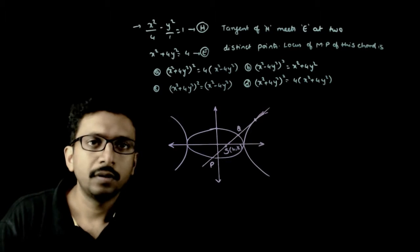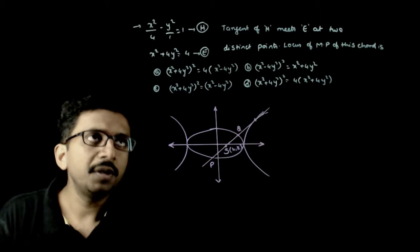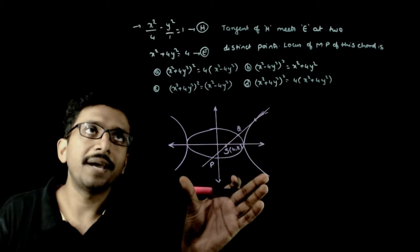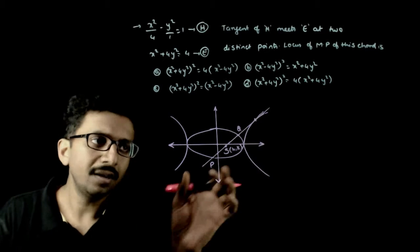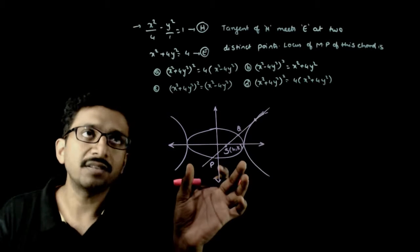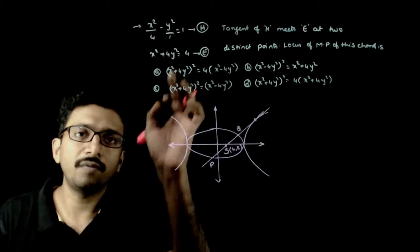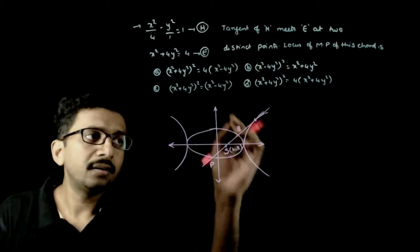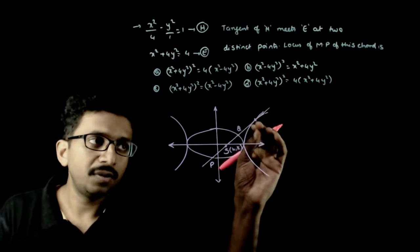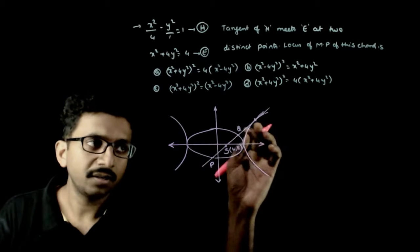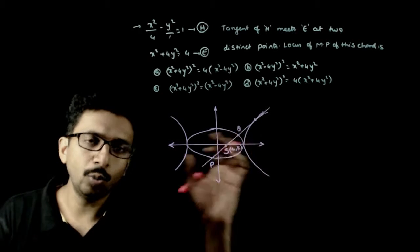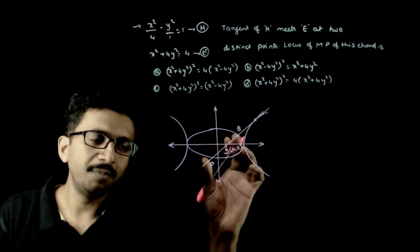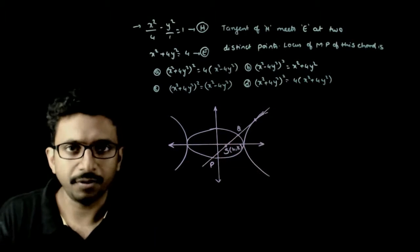Welcome students. This question gives you a hyperbola x²/4 - y²/1 = 1 and an ellipse x²/4 + y²/1 = 1. Tangents are drawn to this hyperbola to cut the ellipse at two points P and Q. You are asked to find the locus of the midpoint of chord PQ.